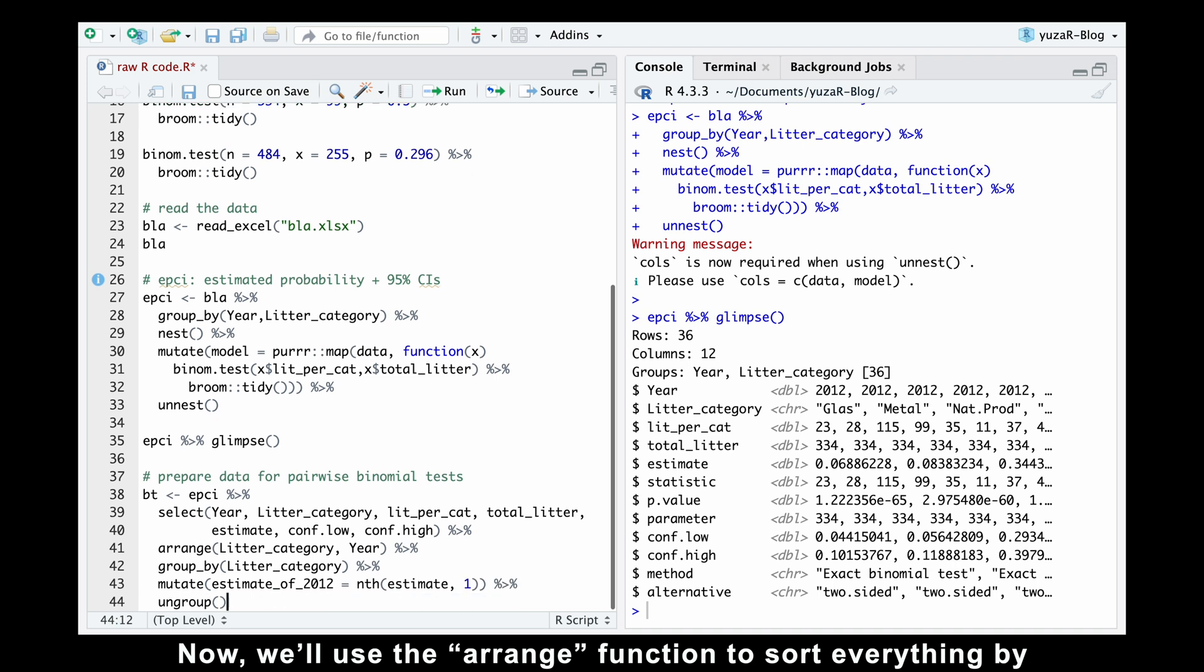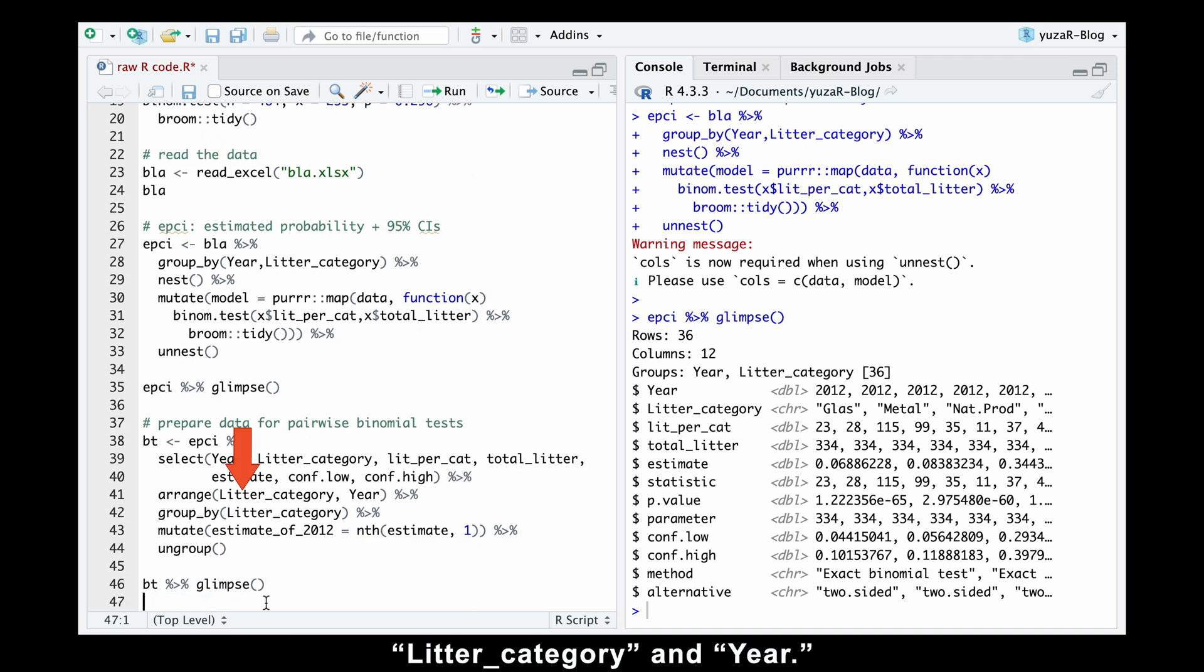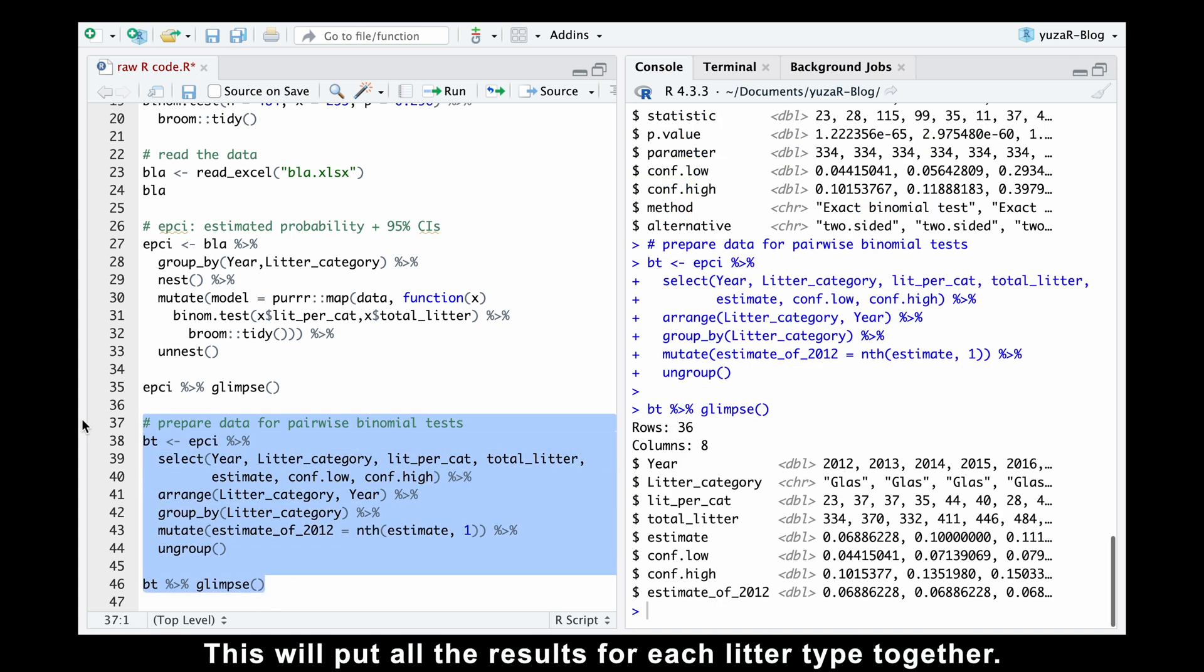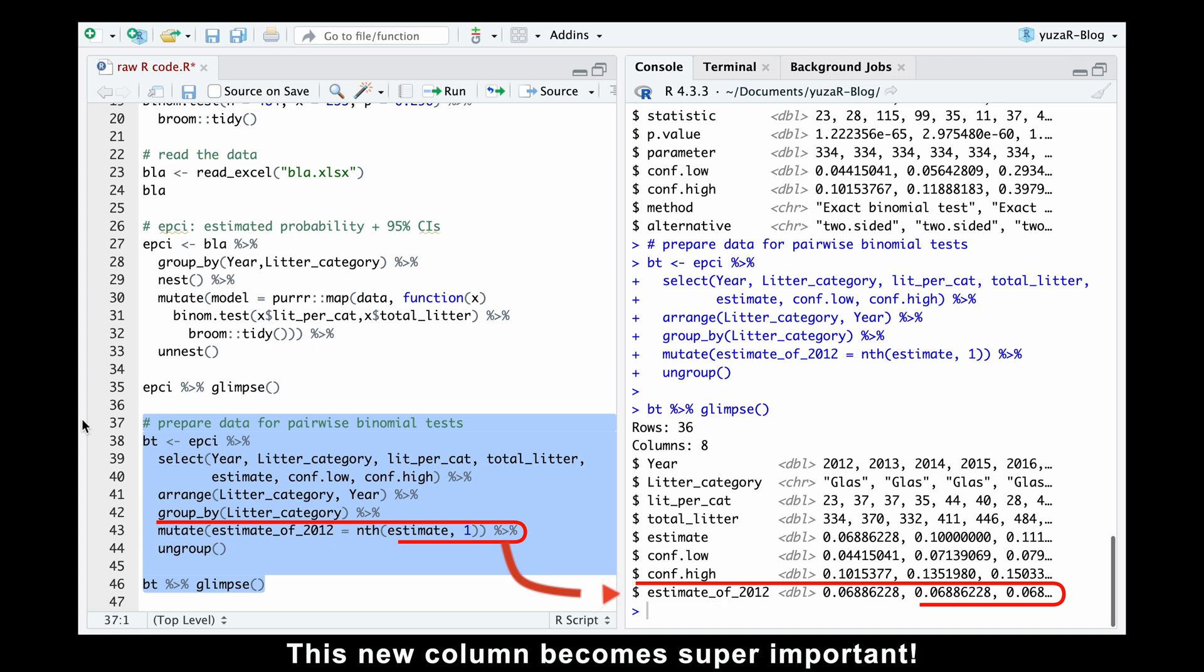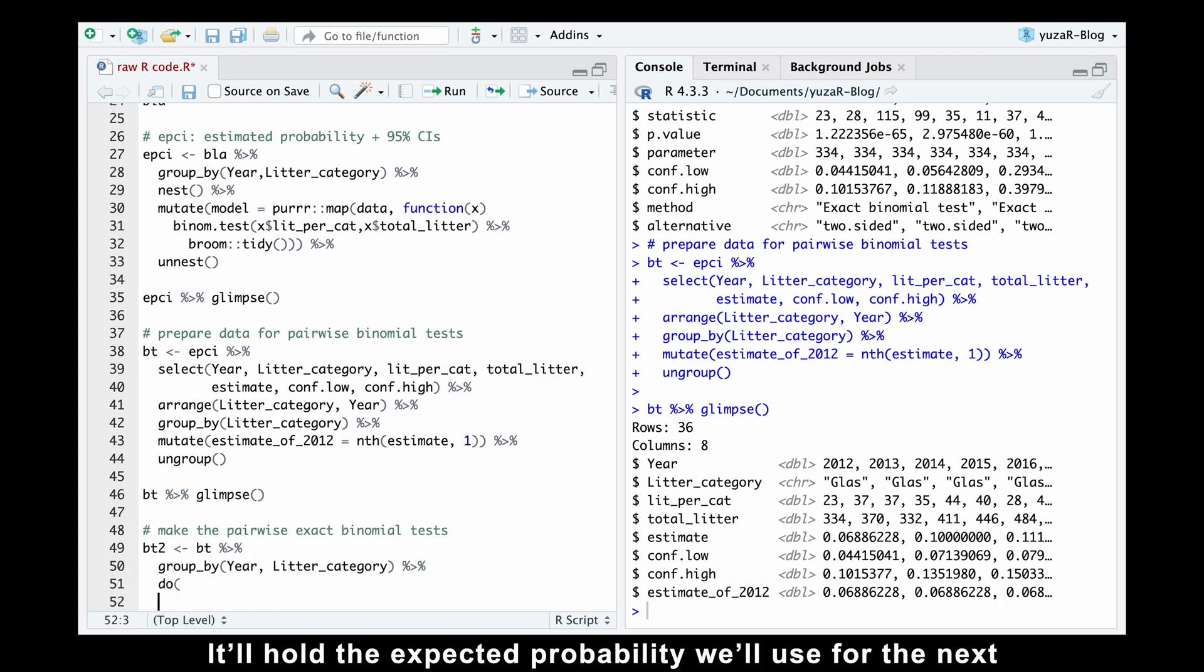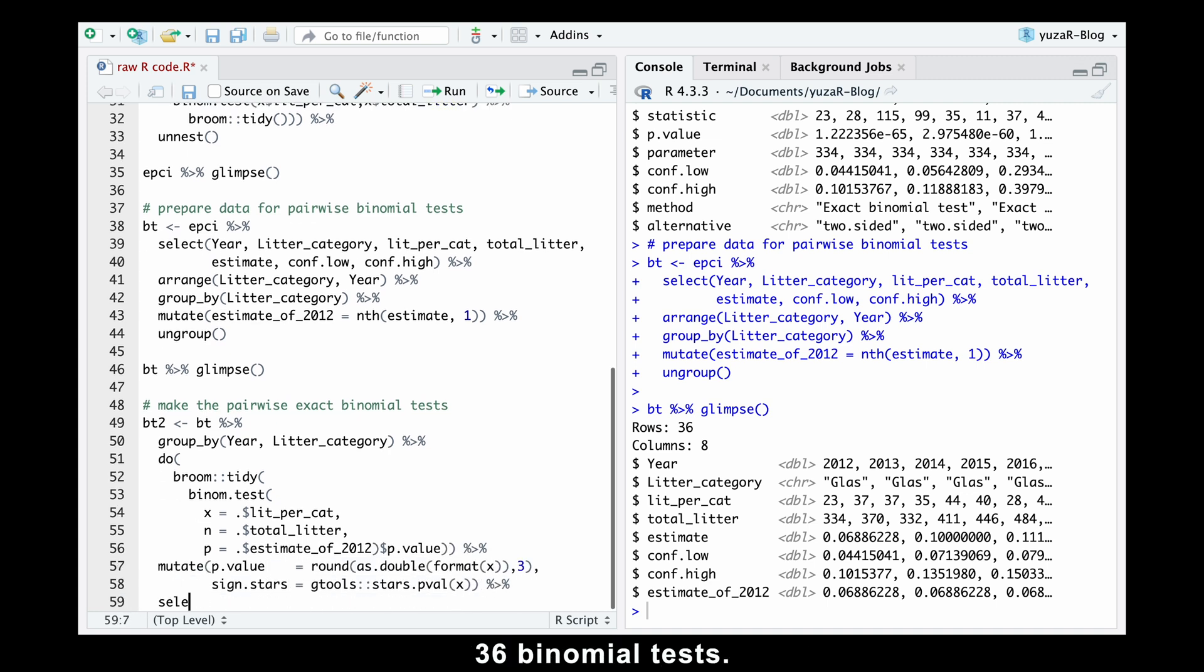Now, we'll use the arrange function to sort everything by litter category and year. Then, we can group the data by litter category. This will put all the results for each litter type together. Finally, we can wrap the first estimate from each group. Remember, that's the probability of encountering that specific litter type in 2012. We'll pop that value into a new extra column for easy reference. This new column becomes super important.